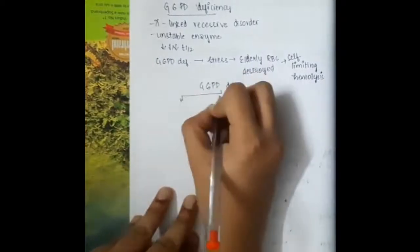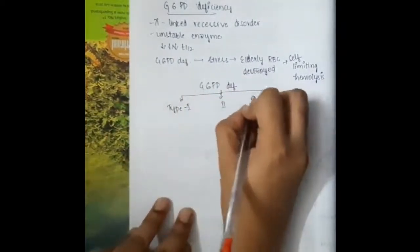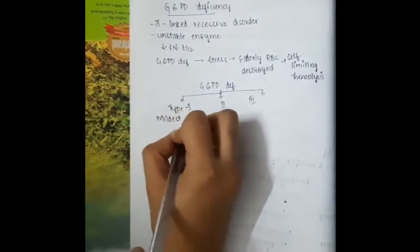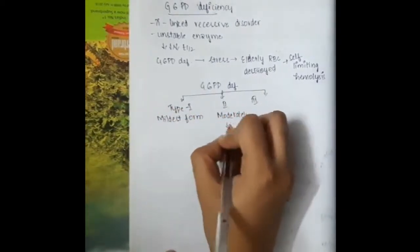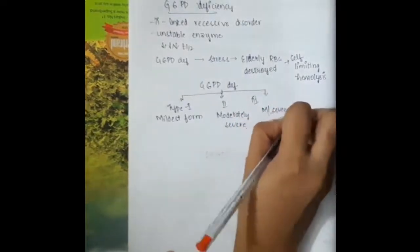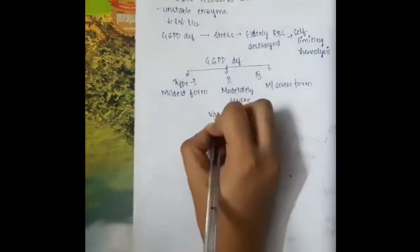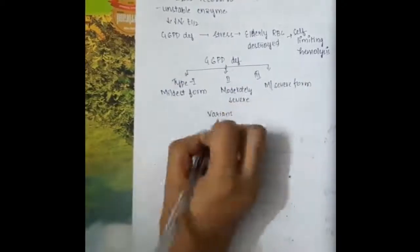We have three different types of G6PD deficiency: Type 1, Type 2, and Type 3. Type 1 is the mildest form, Type 2 is moderately severe form, whereas Type 3 is the most severe form of G6PD deficiency.